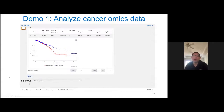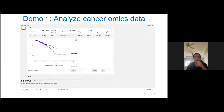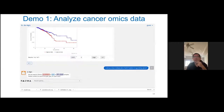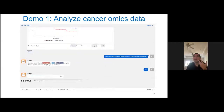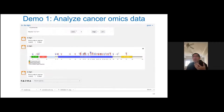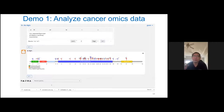You can generate more complex work, like a lollipop plot to show mutation distribution in a gene in TCGA kidney cancer. Once you confirm, you get an interactive lollipop plot in seconds where you can see all the detail and zoom in. These examples show that for many types of analysis, you can directly talk to Dr. BioWrite to generate figures.